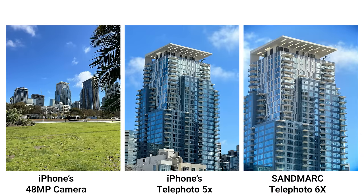Here you can see that the 6x is better able to zoom in on details of the building. The sharpness and clarity of the zoom is in part due to the 48 megapixel, but also because the native 5x lens is equivalent to 120 millimeters, while the 6x is equivalent to 144 millimeters.